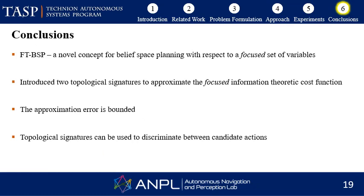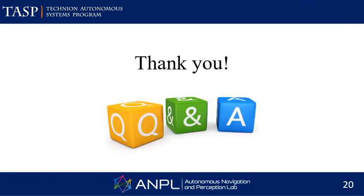To conclude, we introduced a novel concept that considers topological aspects for belief space planning with respect to a focused set of variables. We developed two topological signatures and empirically showed a very high correlation between both signatures and a focused information-theoretic objective function. We developed bounds for the approximation error, and in the paper we rigorously showed that under some conditions these approximations converge to the optimal solutions. The bottom line is that these topological signatures can be used to discriminate between candidate actions in the information theoretic, focused beliefs-based planning problem. Thank you for listening.